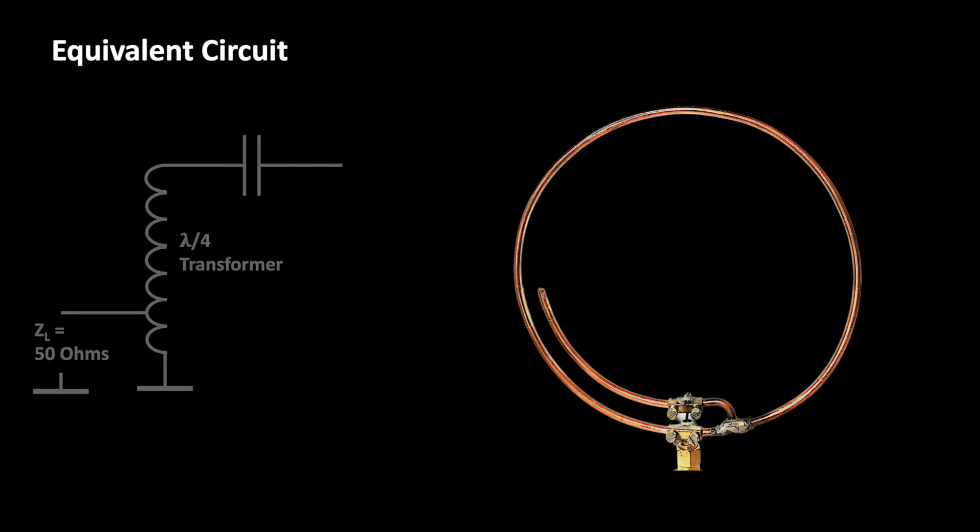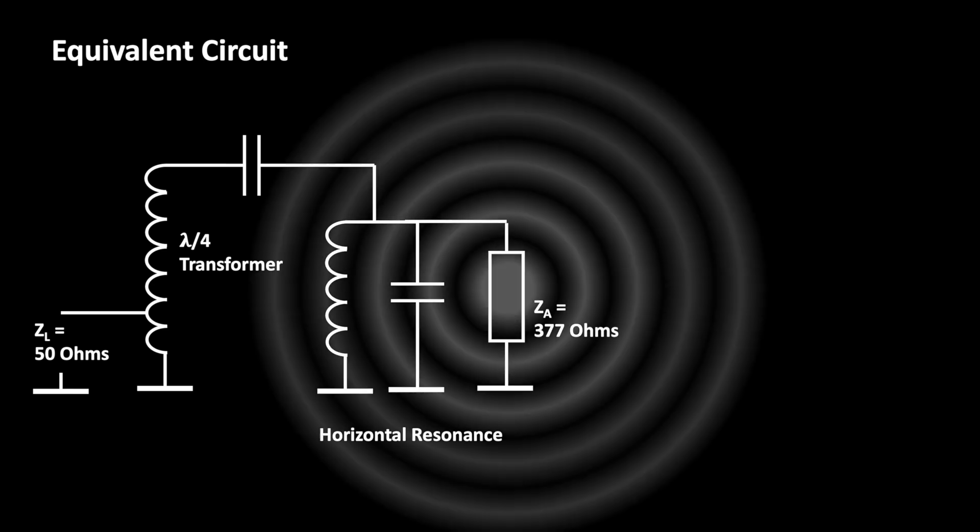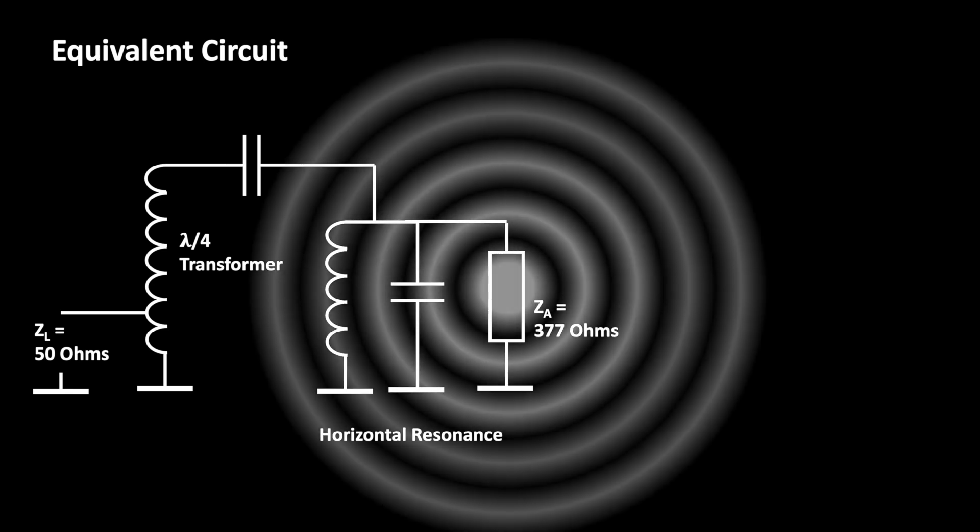And then we have the loop itself, which we represent by a LC resonant circuit that has our desired resonant frequency. And then we have the impedance of free space, which is about 377 ohms. Just as a side note, the impedance of free space is a nature constant that can be derived from the square root of the electric field constant divided by the magnetic field constant.